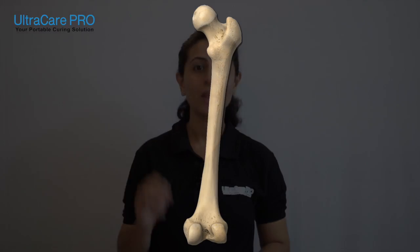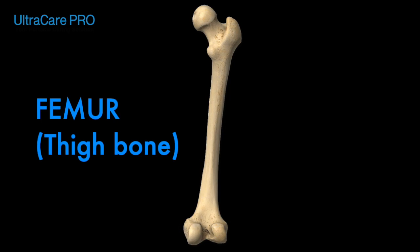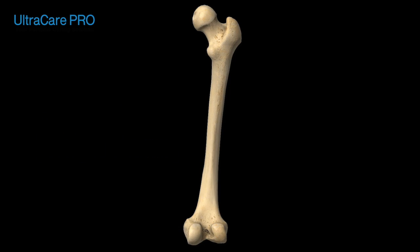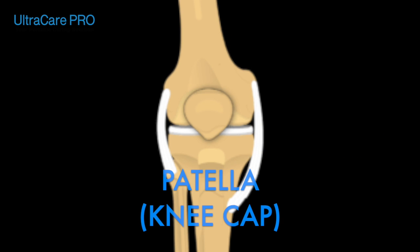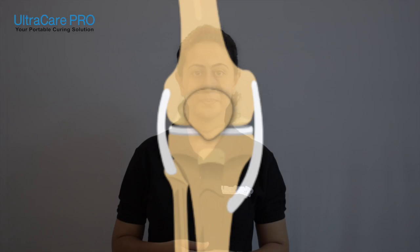Knee joint comprises of three bones. These are the femur bone, also called as the thigh bone, the tibia bone, also called as the shin bone, and the patella bone, also called as the kneecap bone.